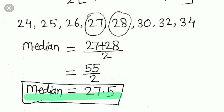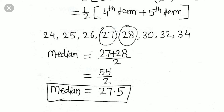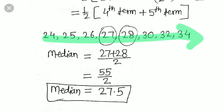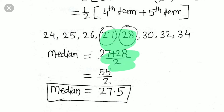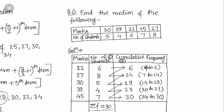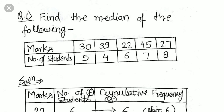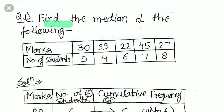The sum of the 4th and 5th terms is 55, and half of that is 27.5, so the median is 27.5. If the number of data values is small, simply arrange them, take the two middle values, add them, and take half — that is the median.